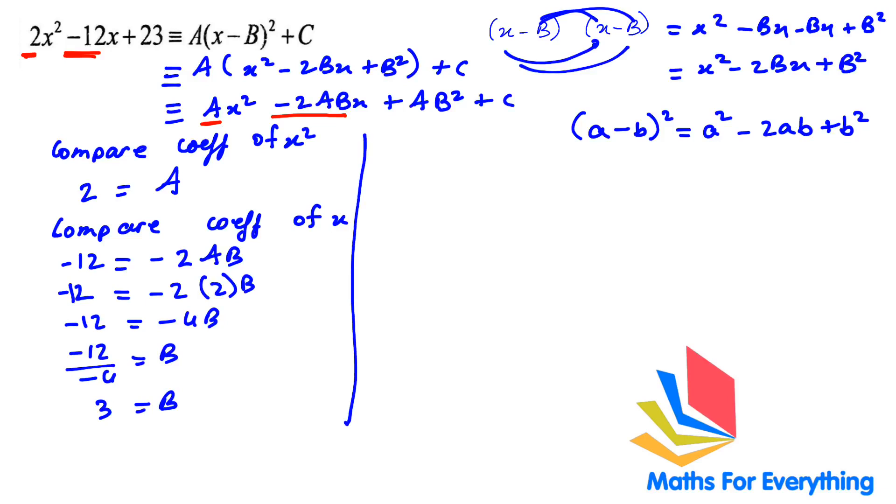We found our a and b. Now what is remaining? c is remaining. We are going to compare constants now. Constants are numbers without x. So this side we have 23.